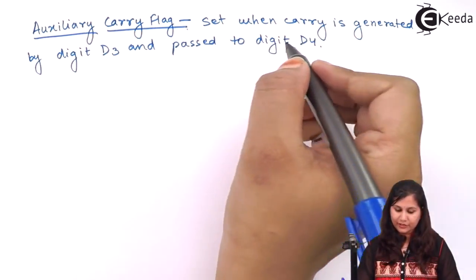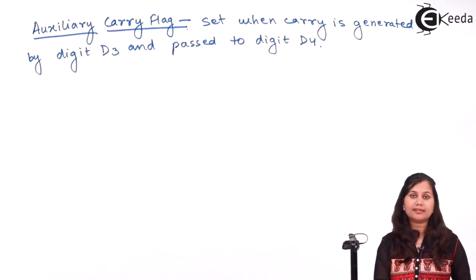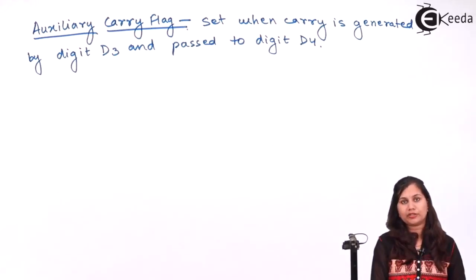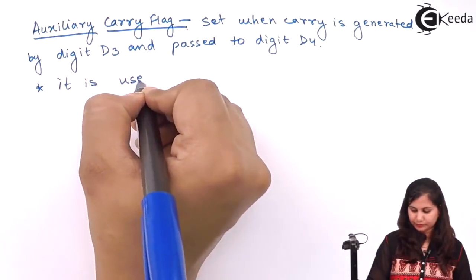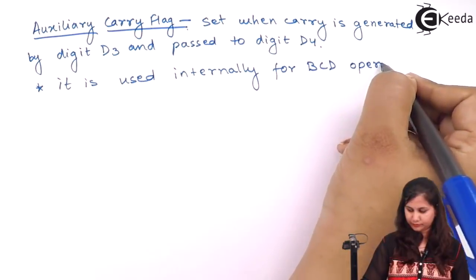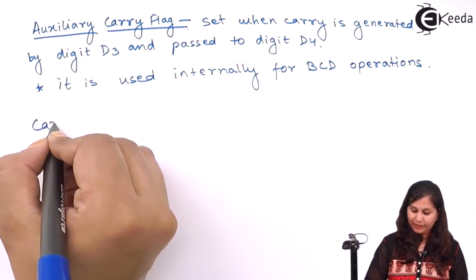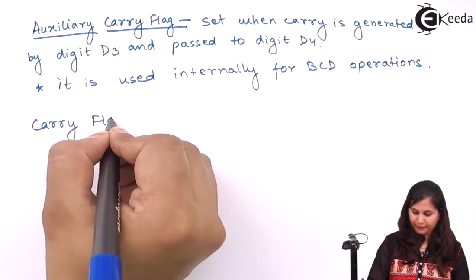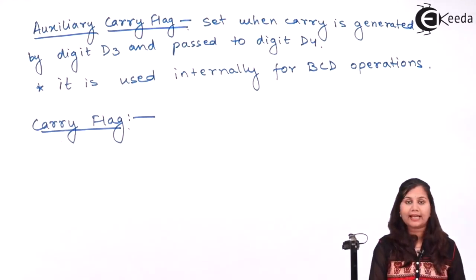This condition generally occurs when BCD operations are involved in the microprocessor. Then we have the carry flag: if any arithmetic or logical operation generates a carry, this carry flag is set to 1; otherwise it is reset.